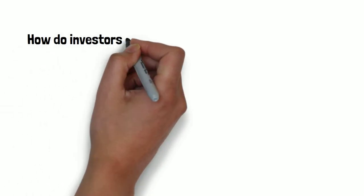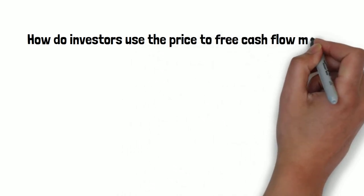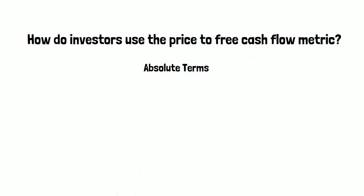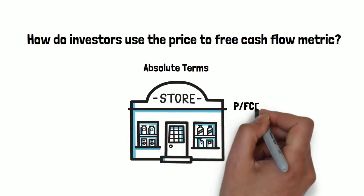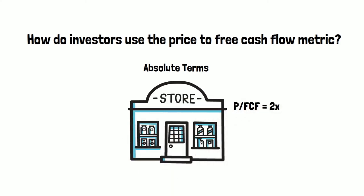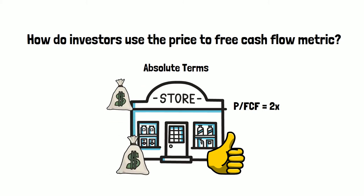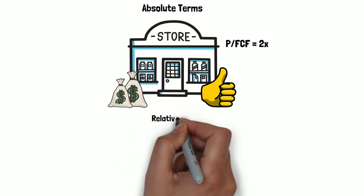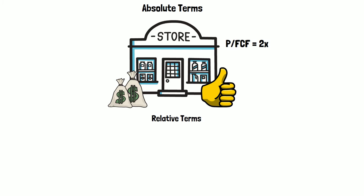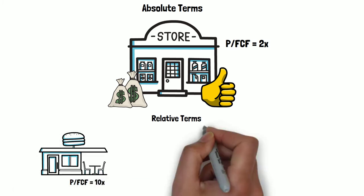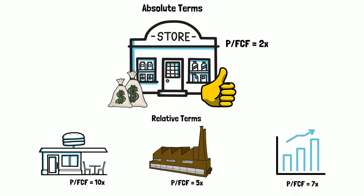How do investors use the price to free cash flow metric? In absolute terms, if a company trades on a low price to free cash flow multiple, it could be an indication that the company is undervalued relative to the free cash flow it can generate. In relative terms, investors use the price to free cash flow multiple as a benchmark against other companies, industries, or the market as a whole. It enables investors to determine whether one investment is cheap or expensive relative to the other.